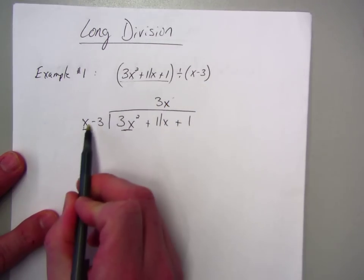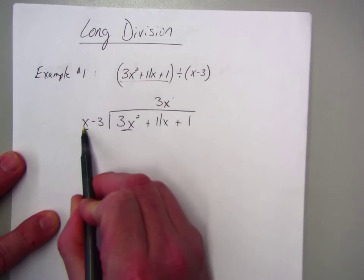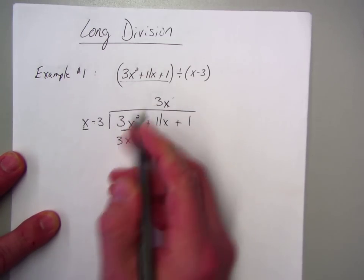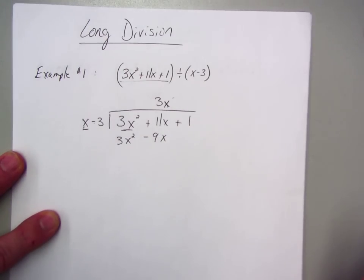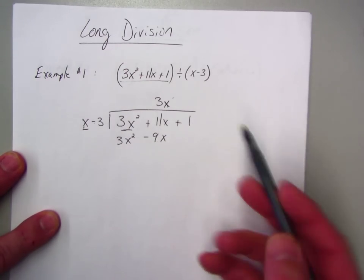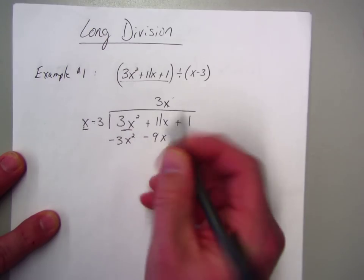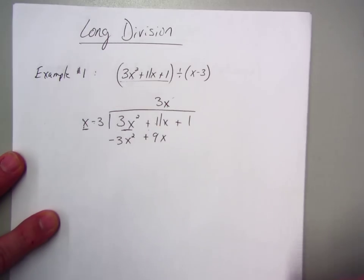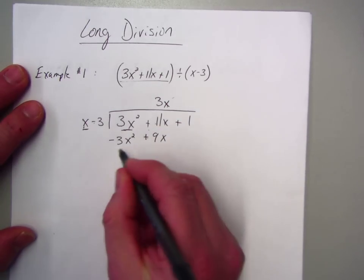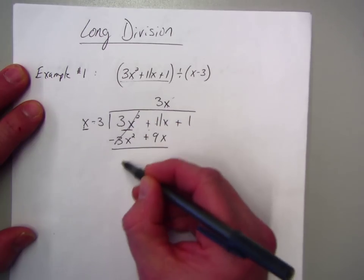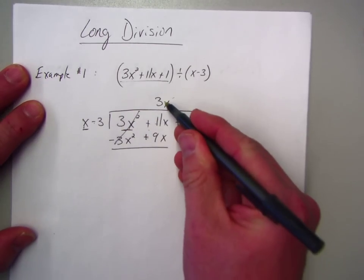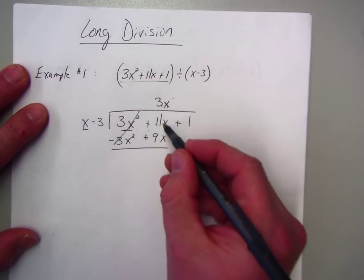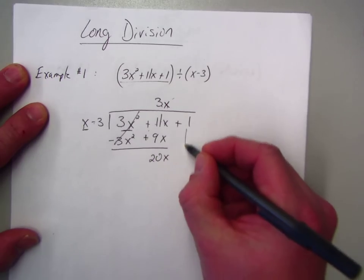Now you're going to take the 3x, and you're going to multiply it to these two terms. So you're going to do 3x times x, which is 3x squared. 3x times a negative 3 is a negative 9x. Just like in long division, you always subtract. So I'm subtracting the terms. And since I'm doing 11x minus a negative 9x, so this becomes a positive. In other words, you change the signs, because you're subtracting. So I subtract, I get 0, and that's what you want to happen. If not, then you've got to go back and change this. So 11 plus 9 is 20x, and now you bring down the next term.